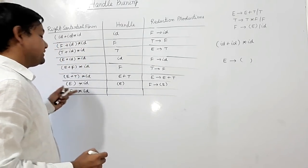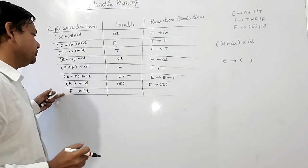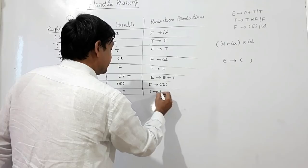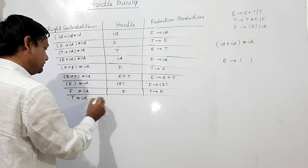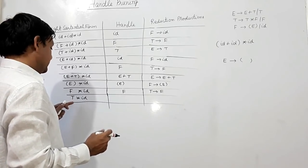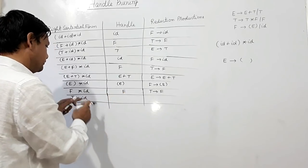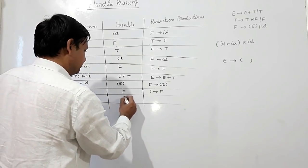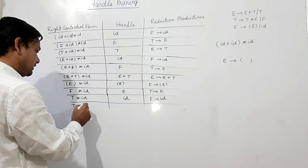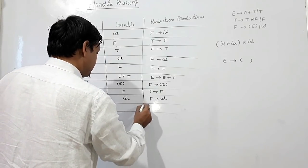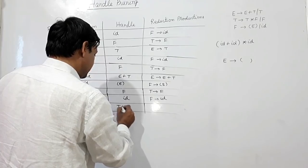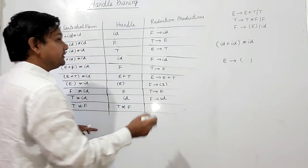Now T star F is the pattern we need. So this F should also be reduced to T. F is the handle here, and T reduces F, giving T star id. Now id should be the handle, and we will reduce this id by F, giving T star F. Now T star F can be taken as handle and T star F can be reduced by T, giving T.